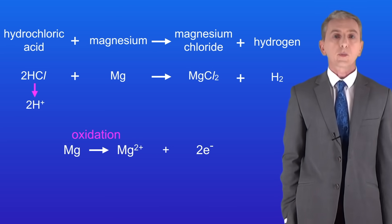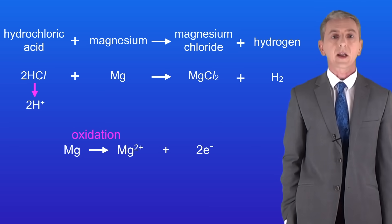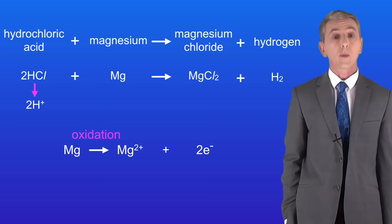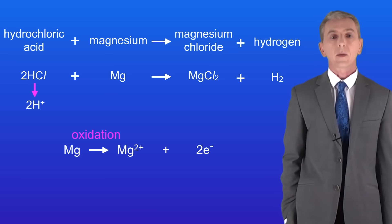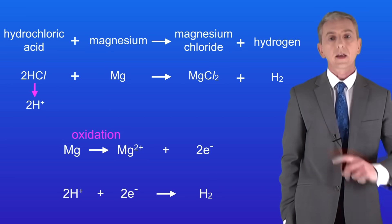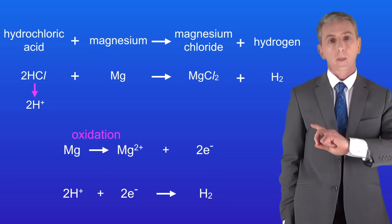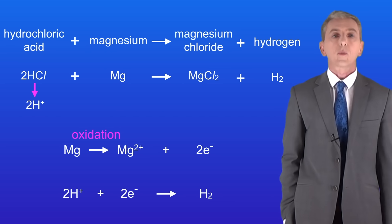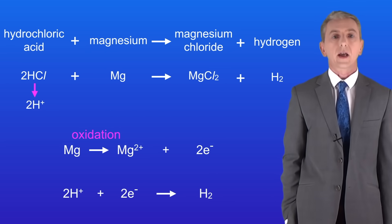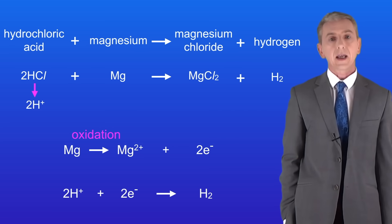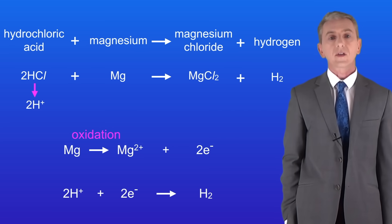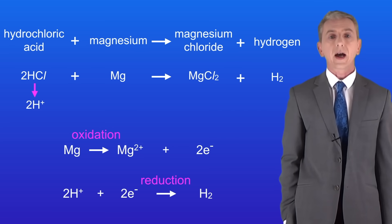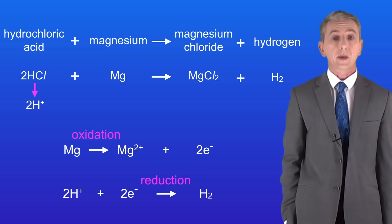The H+ ions which are released from the acid now accept these electrons and they form hydrogen gas, as shown here. Because the hydrogen ions are gaining electrons, this is an example of reduction — the hydrogen ions are being reduced.